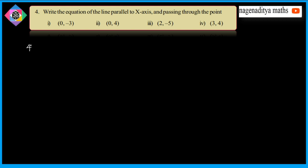The line parallel to x-axis is always of the form y is equal to k. And the line parallel to y-axis is of the form x is equal to k.